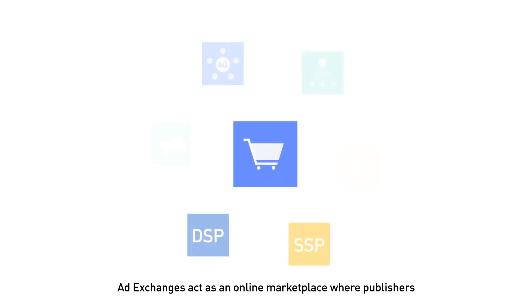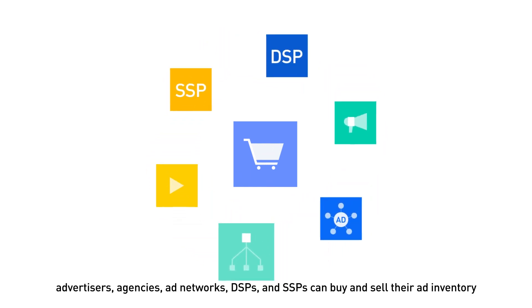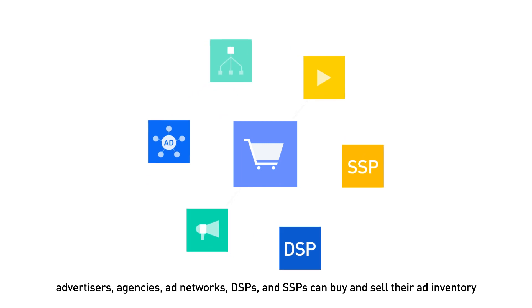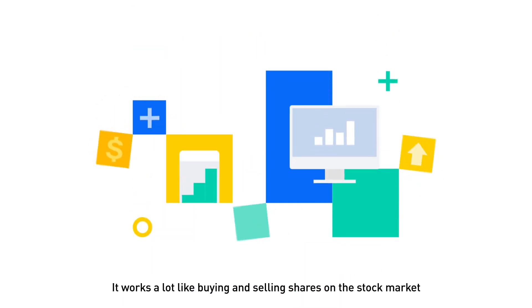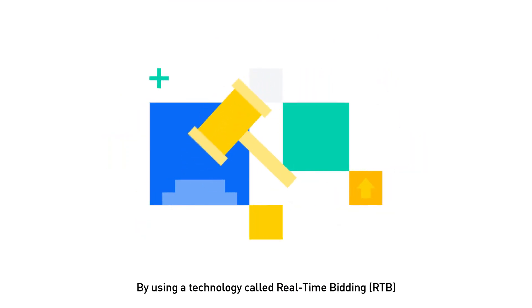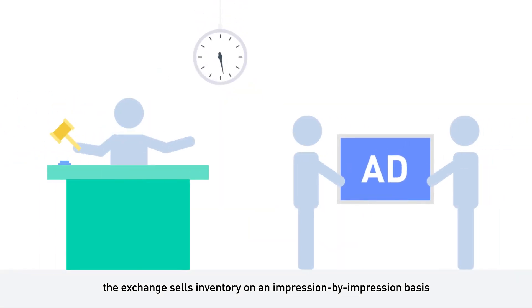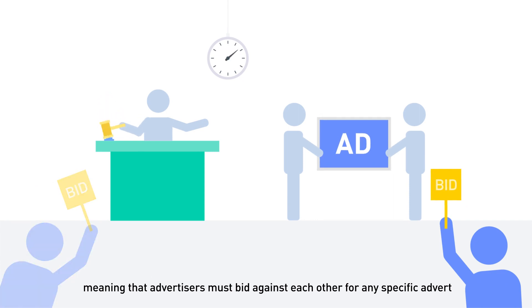Ad exchanges act as an online marketplace where publishers, advertisers, agencies, ad networks, DSPs, and SSPs can buy and sell their ad inventory. It works a lot like buying and selling shares on the stock market. By using a technology called real-time bidding, the exchange sells inventory on an impression-by-impression basis, meaning that advertisers must bid against each other for any specific advert.